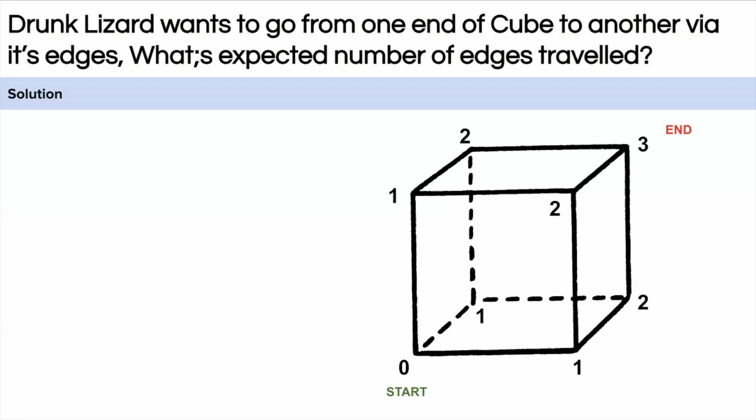So here the lizard is at point zero. It is the starting point and the lizard wants to reach point number three which is the ending point. Also the lizard is drunk.